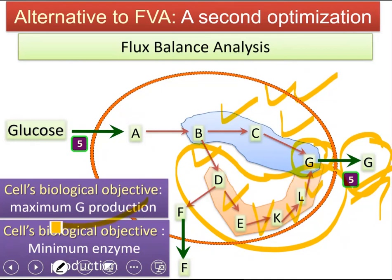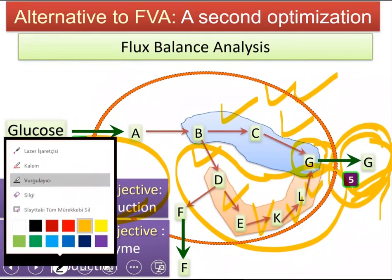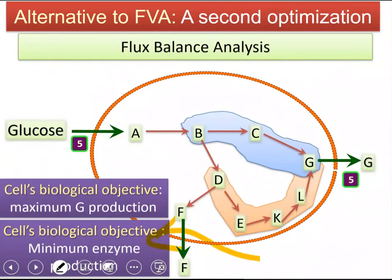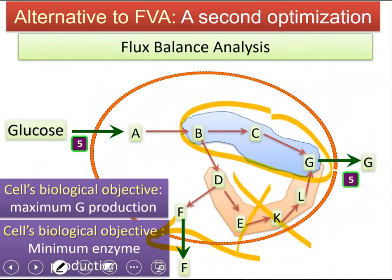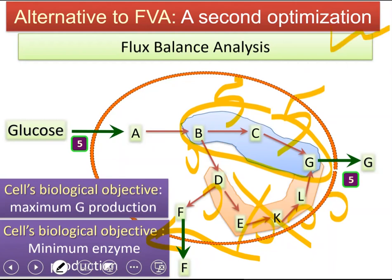The cell produces the same amount of G on both roads, so it would try to choose the shortest path because it can produce the same amount of G with less work and fewer resources. So after running the system with the first biological objective — say maximum G production or maximum growth — you fix the value of the objective function to its optimum value, say 5. You then perform a second optimization to minimize enzyme production, which selects the shorter path, sets the longer path fluxes to 0, and eliminates the alternate optimal problem.